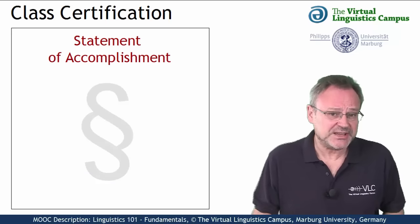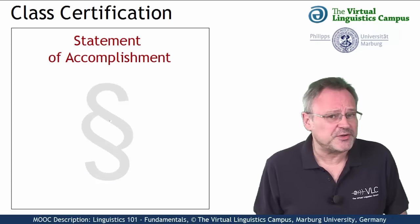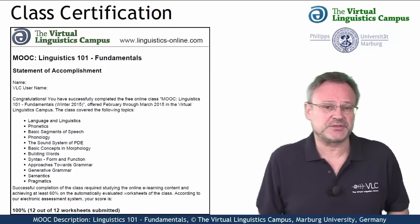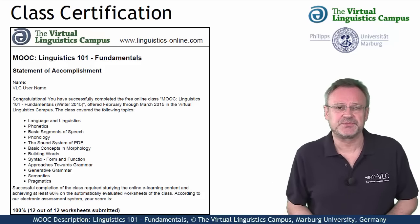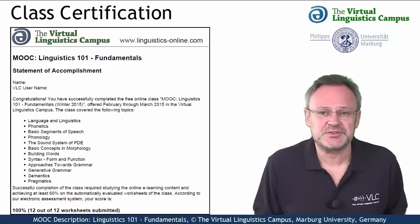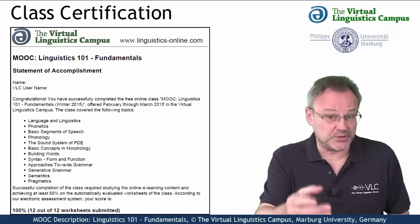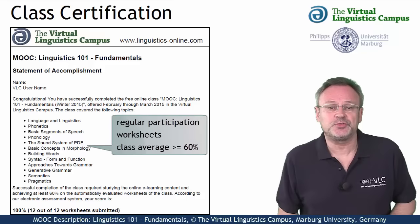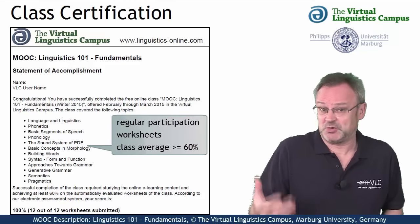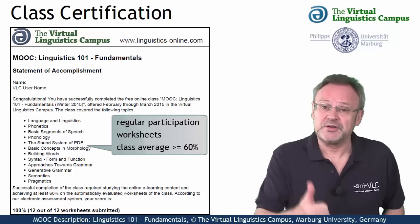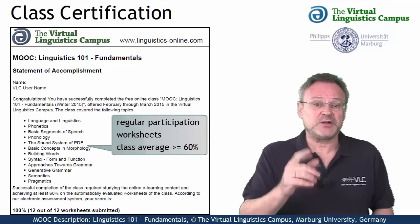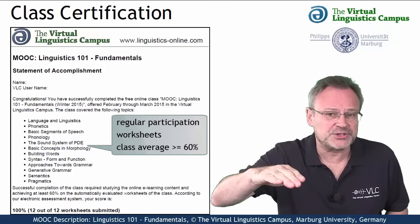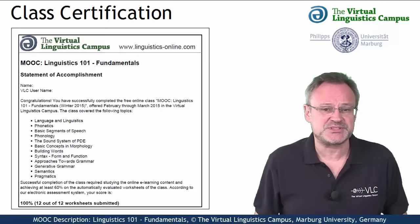The second option is the statement of accomplishment, also for free, and also issued by the Virtual Linguistics Campus. To be given such a certificate, we not only want your regular participation, but we also want you to complete the worksheets and our electronic tests — one for each e-learning unit — and achieve an overall score of at least 60%.